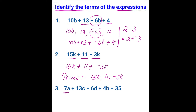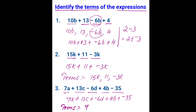The third expression is a long expression. Let us look at the parts: 7a, 13c, negative 6d, 4b, and negative 35. Let us rewrite that as an addition expression: 7a plus 13c plus negative 6d plus 4b plus negative 35. Remember, subtracting is adding the opposite. So the terms are 7a, 13c, negative 6d, 4b, and negative 35.